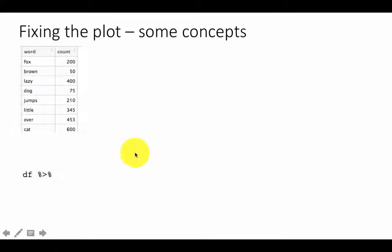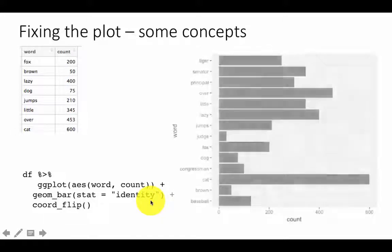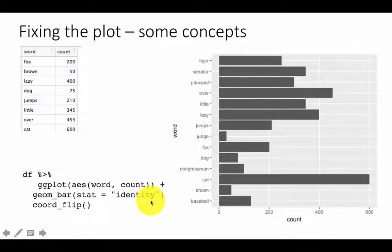Let's plot it first. This is just an extract from that. I'm saying, tf, ggplot, word, count. Of course, the column names are word and count, so that's what we're using here, plus geom_bar, stat equals identity, plus coord_flip. So here, what you see again is, as expected, the words are ordered alphabetically. Baseball, Brown, Cat, Congressman, Dog, Fox, Judge, et cetera, completely alphabetically ordered.